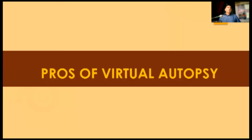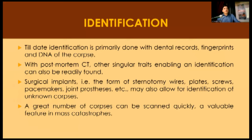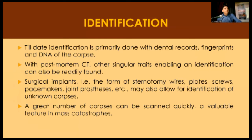Now, the pros of virtual autopsy. First is identification. Identification is primarily done with dental records, fingerprints and DNA at routine autopsy. With post-mortem CT, other unique traits enabling identification can readily be found — surgical implants such as sternotomy wires, plates, screws, pacemakers, joint prostheses, etc. can be identified quickly, which may allow identification of unknown bodies. A large number of corpses can be scanned quickly, which is a valuable feature in mass catastrophe scenarios.